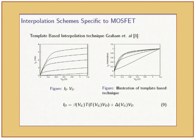That is what is explained here. ID then becomes this. T of VD is that template function. Then you apply the warping factor to make sure that the knees coincide. Then this beta VG is the scaling ratio, the ratio at a particular VG. Then you account for this slope. This is not a straight line. There is some slope with respect to VD. That is accounted for by using this. This technique reduces storage. But it might not be very accurate.